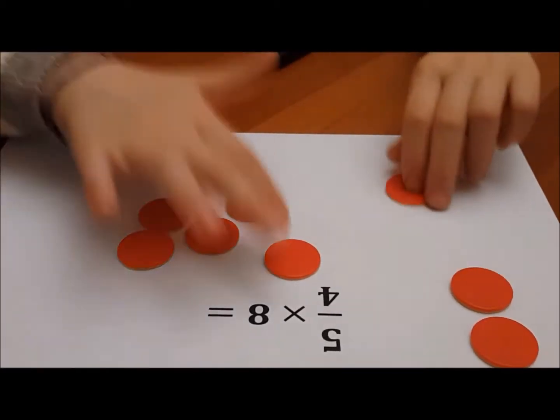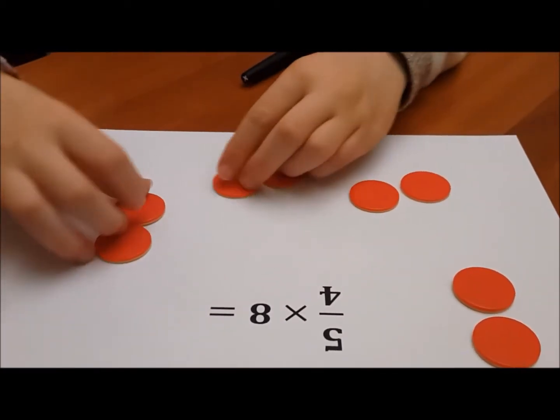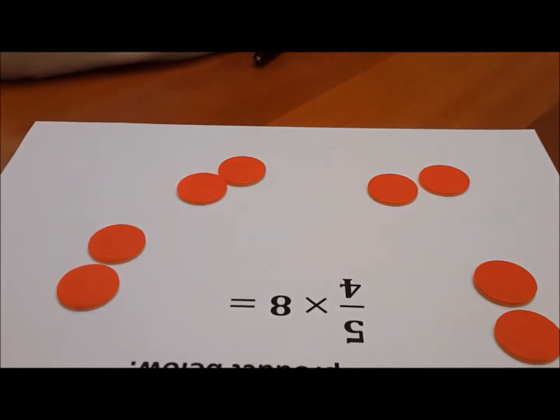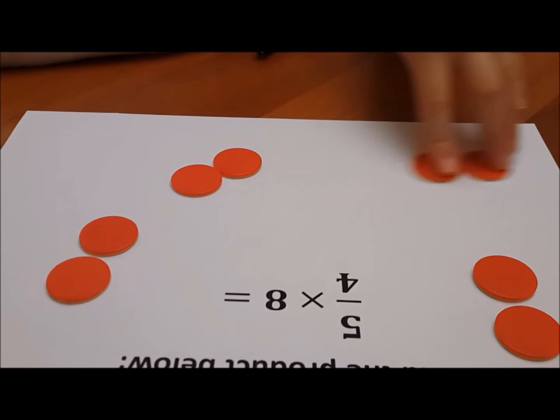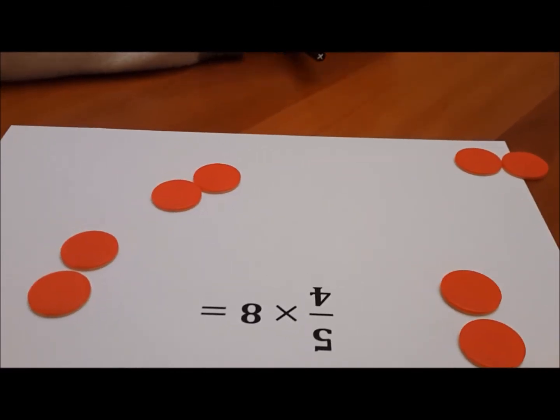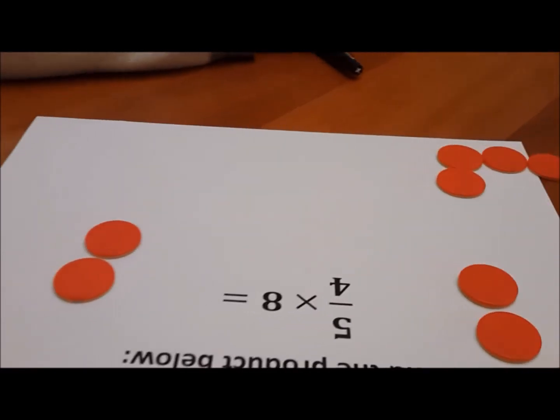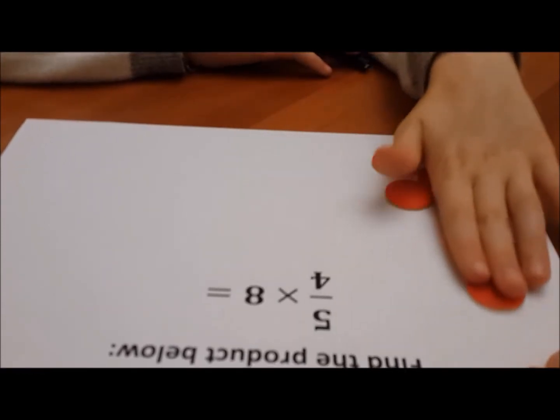Break them up into 4 equal parts. So show me 1 fourth of 8. That's 1 fourth of 8. Show me 2 fourths of 8. Put them together. Show me 3 fourths of 8. Show me 4 fourths of 8. Show me 5 fourths of 8.